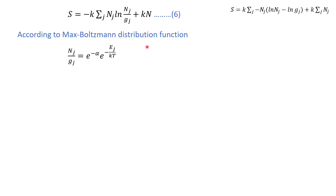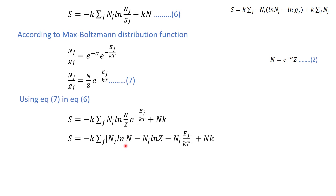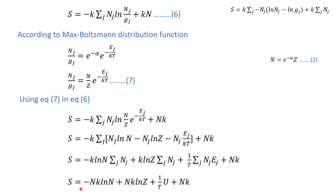According to equation number seven, log(nj/gj) equals the given relation. We know that N equals e to the power minus alpha times Z, so e to the power minus alpha equals N divided by Z. Substituting into equation number six, log(nj/gj) becomes log(N/Z times e to the power minus ej/kT). Applying the log, we have log N minus log Z minus ej divided by kT, since the exponential and log cancel.